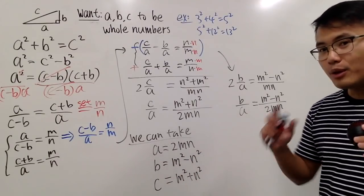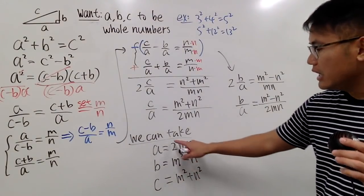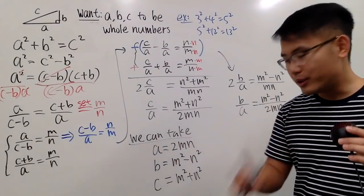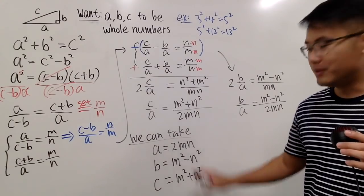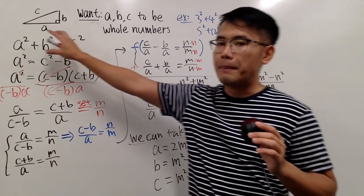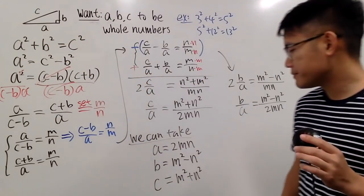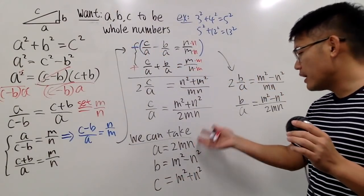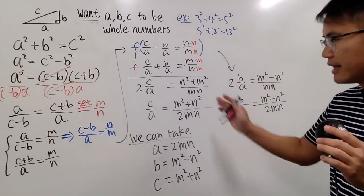And then the second thing is that you can also verify this on your own. If you square this, and then you add it with the square of that, you are going to get this squared. This right here is guaranteed to be a Pythagorean triple. It's going to satisfy the Pythagorean theorem. As long as you pick M and N to be whole numbers, you will get a nice Pythagorean triple.